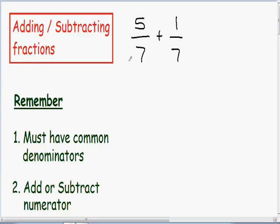So what that means is that the bottom number in both fractions have to be common, or they have to be the same. So let's just get started with this example. Here we have 5 over 7 plus 1 over 7.